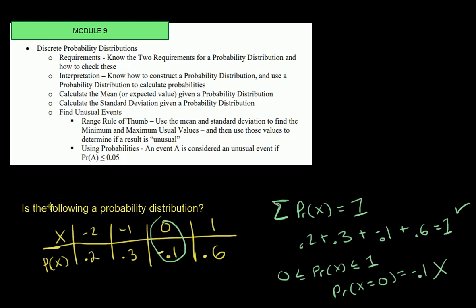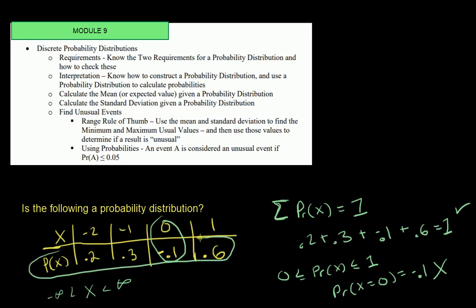A very common misunderstanding is that students think if X is negative, it cannot be a probability distribution — but that's not true. X is allowed to be negative; X can be any number between negative infinity and positive infinity. What is bounded is the probability of X. When determining if something is a probability distribution, focus only on the probability row, not the X values. Remember that for your exam.